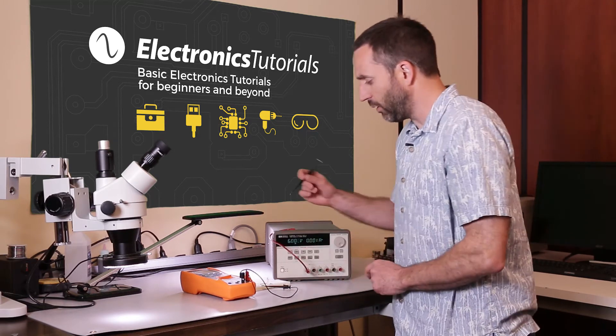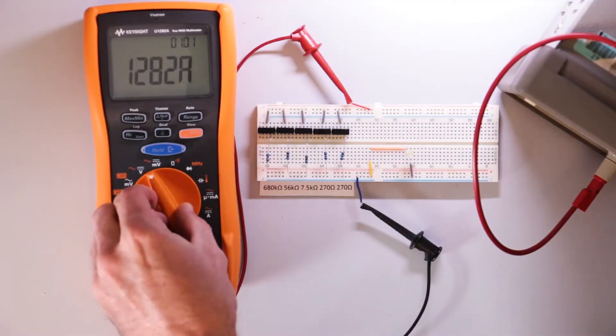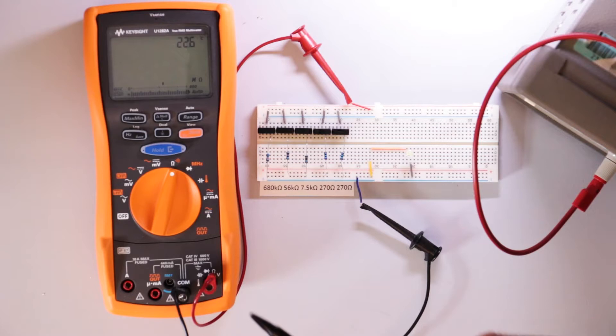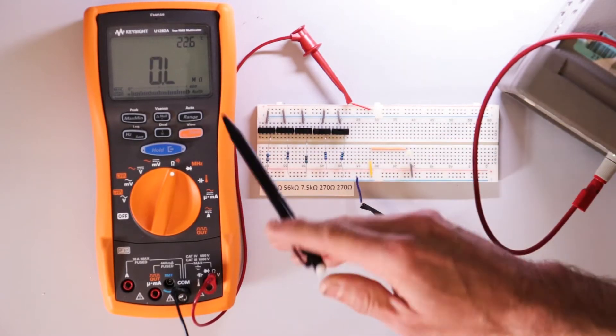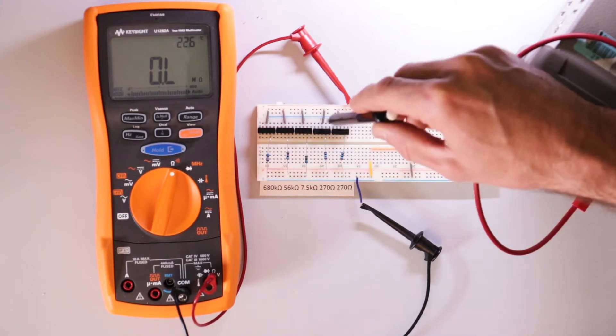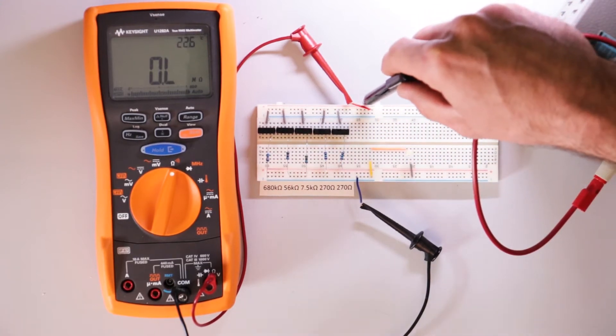Right now I'll turn the DMM on to ohms. So it's measuring right now, you should see zero or OL for overload. There's infinite resistance right now between this point here and this point.